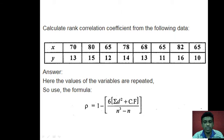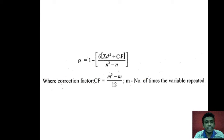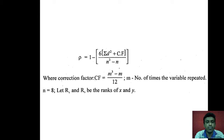This is the formula we are going to use — Spearman's rank coefficient of correlation. As seen in the previous problem, there will be a correction factor CF here. The correction factor formula is M³ minus M divided by 12, where M is the number of times the variable was repeated, that is, the number of places where ties existed.